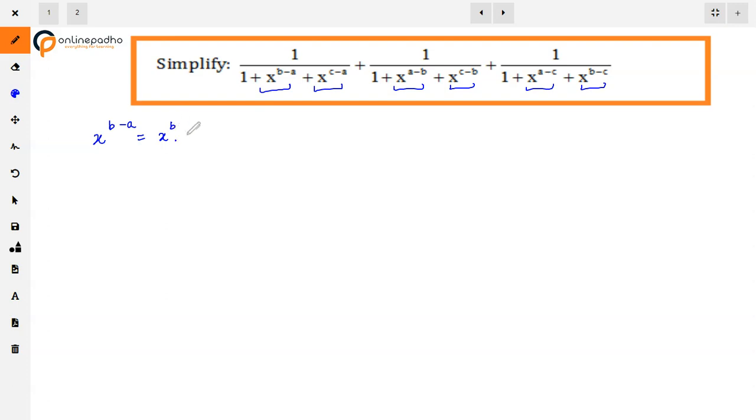x is to power b into x is to power minus a. The property is a raised to power m into a raised to power n is a raised to power m plus n. Then we will break this again. Now if the power is negative, then we will make it positive. What do we do to make it positive? If I put it in denominator, 1 divided, then the power is positive. Means x is to power b minus a can be written as x is to power b upon x is to power a.